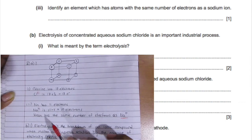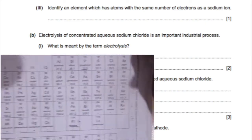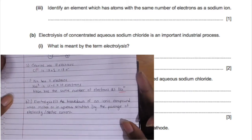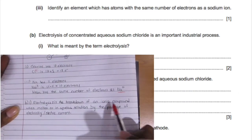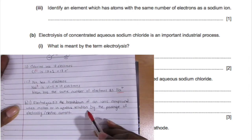So now electrolysis. What is meant by electrolysis? It's the breakdown of an ionic compound, not a covalent one, in its molten or aqueous state by the passage of an electric current.